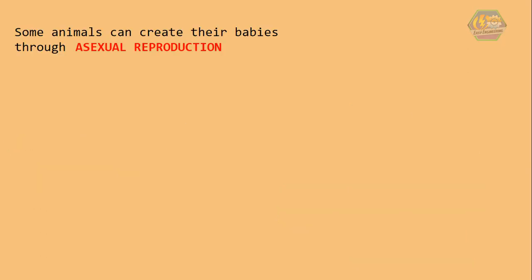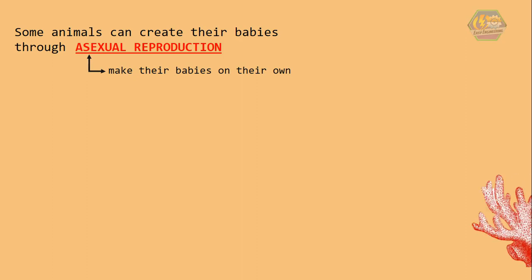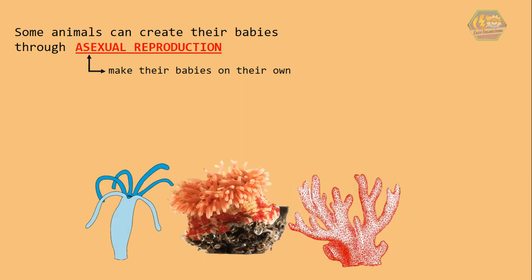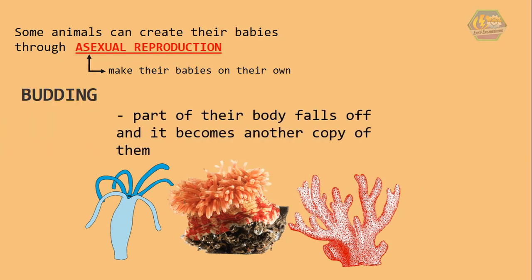Some animals can create their babies through asexual reproduction, which means they make their babies on their own. Some examples are corals, hydras, and sea animals. They use a process called budding, where a part of their body falls off and it becomes another copy of them.